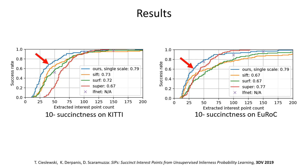A network thusly trained manages to be the most succinct on datasets like KITTI and EUROC, which represent autonomous driving and indoor drone flight scenarios.